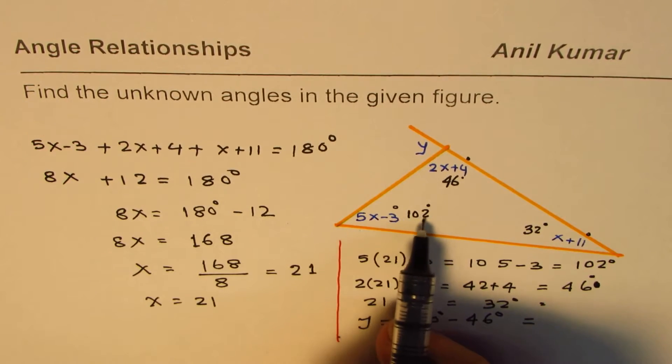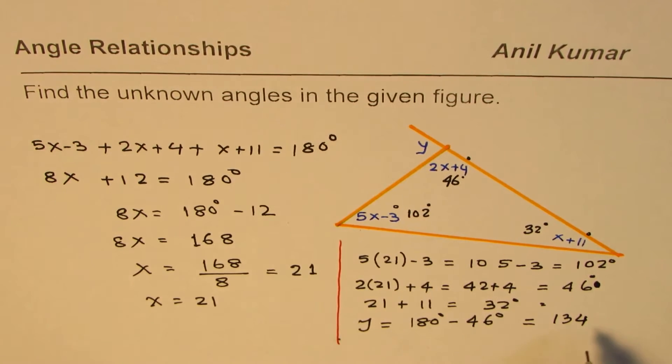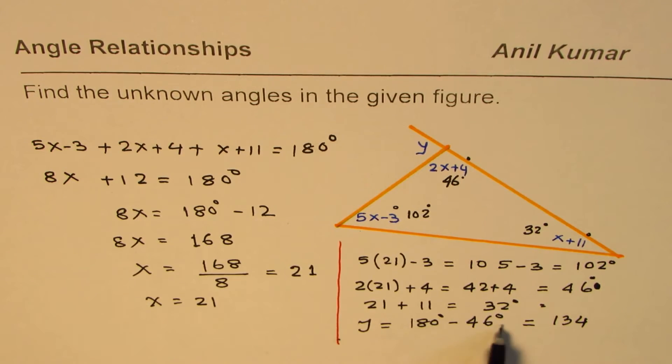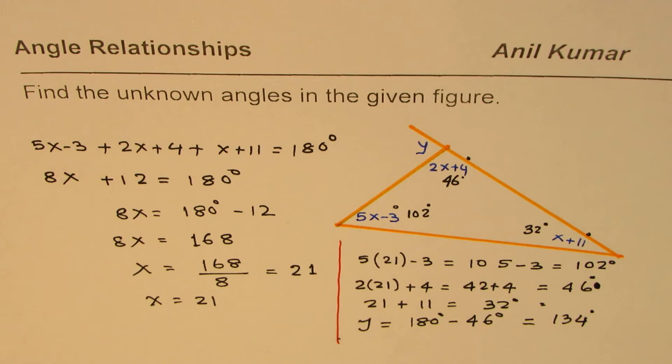So writing answer, I will just add them, and then you can check. 32 plus 102 is 134, so let me write this as 134. That clearly shows that there is some calculation mistake. Okay, no, it's okay, so take away 10, that is fine. So y is 134 degrees, clear.